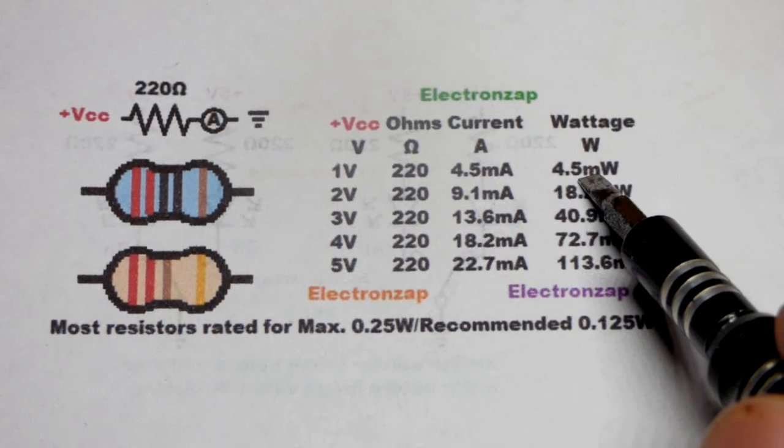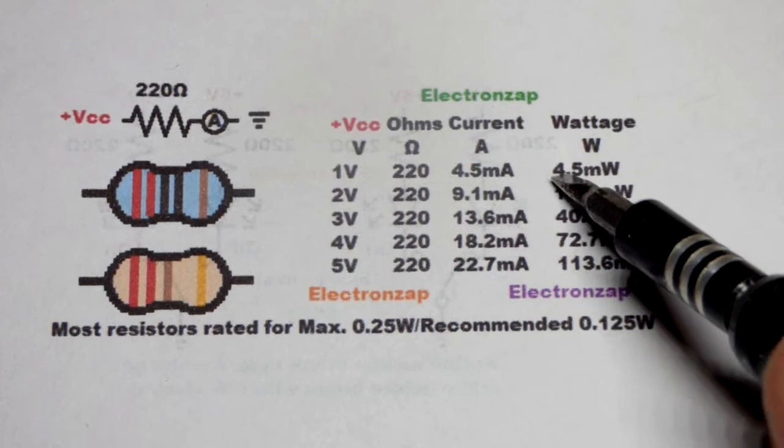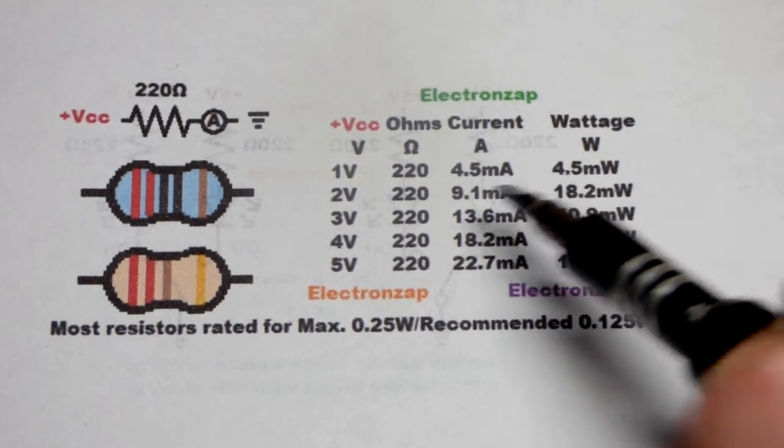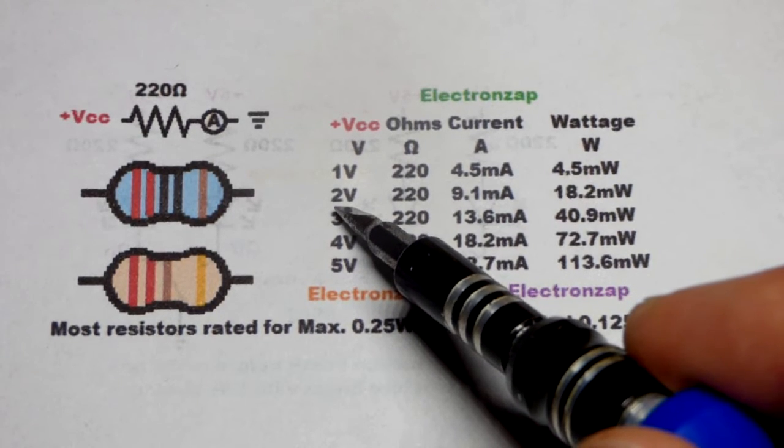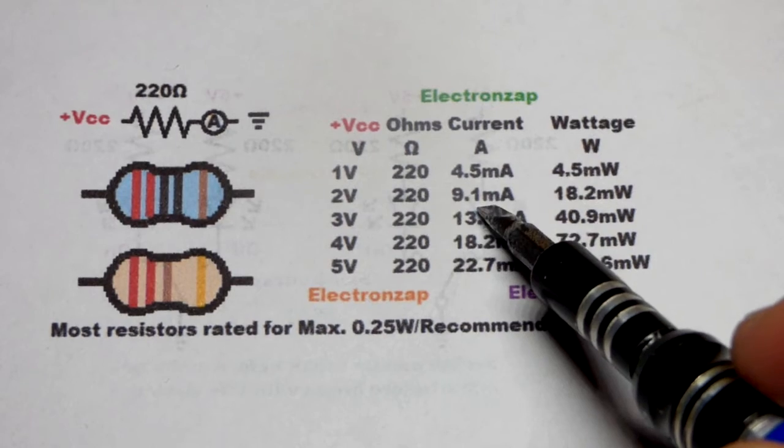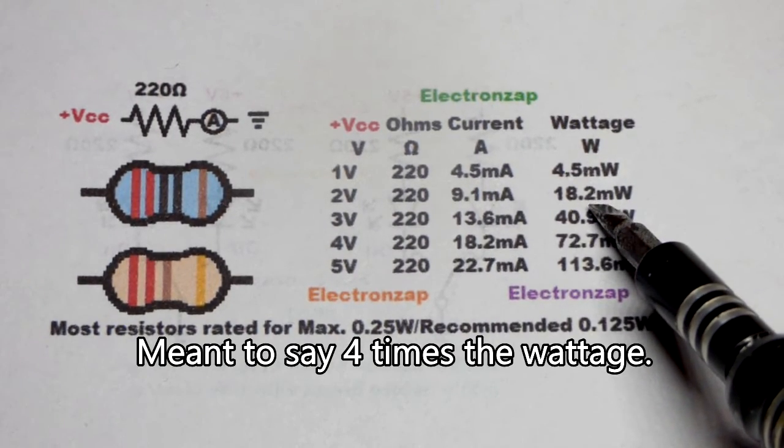Much less than 125 milliwatts. And so you might think I can raise the voltage by a whole lot, but you really can't. Let's go with 2 volts first. So we double the voltage. That will be twice the current flowing through the resistor. We actually get 4 times the wattage.